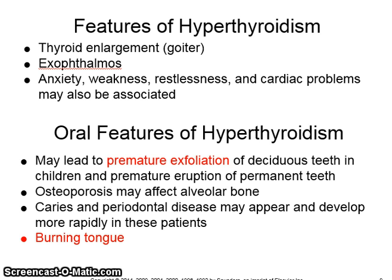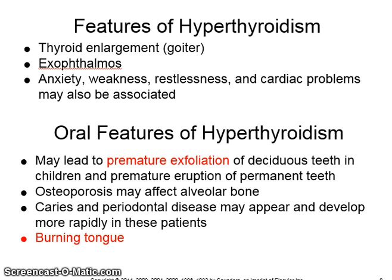The features of hyperthyroidism are an enlarged thyroid or goiter, exophthalmos or eyes that are bulging out, anxiety, weakness, restlessness, and cardiac problems. The oral features are that it may lead to premature exfoliation of deciduous teeth in children and premature eruption of permanent teeth. Osteoporosis may affect the alveolar bone. Caries and periodontal disease may appear and develop more rapidly, and patients can also manifest a burning tongue.